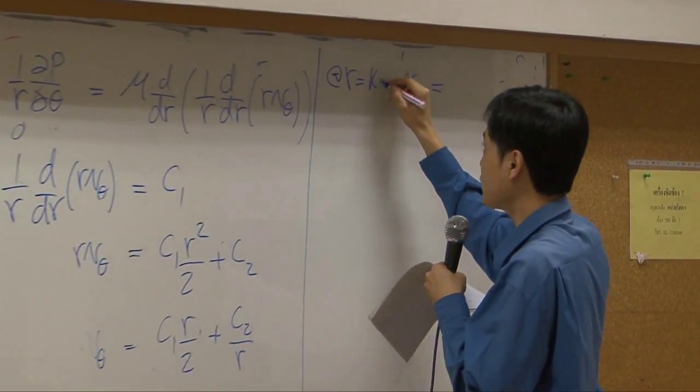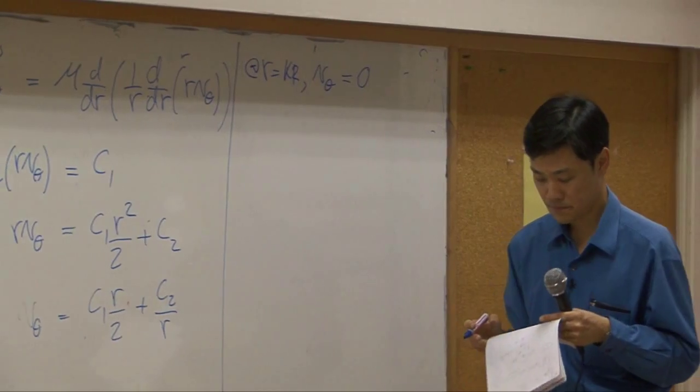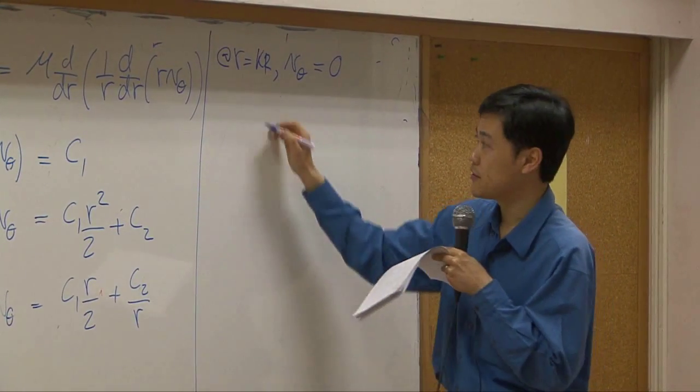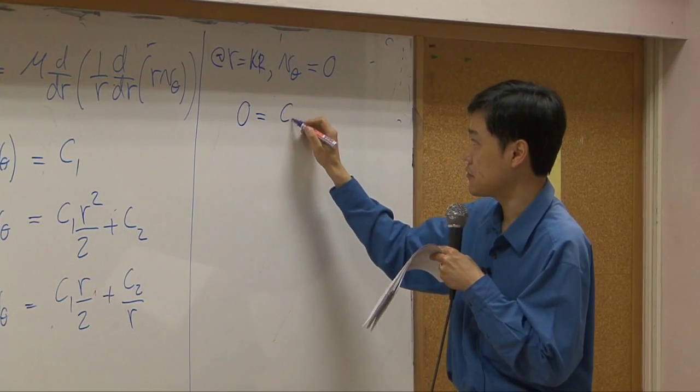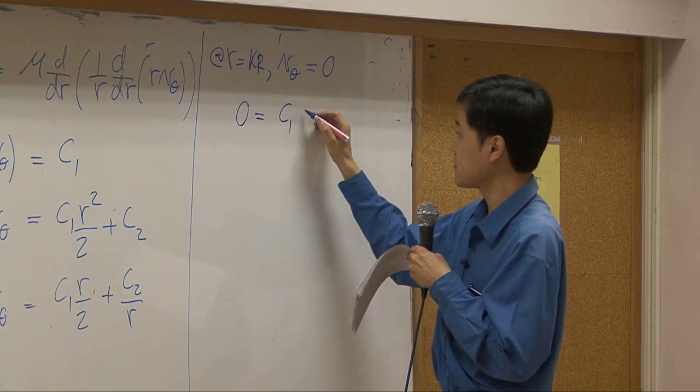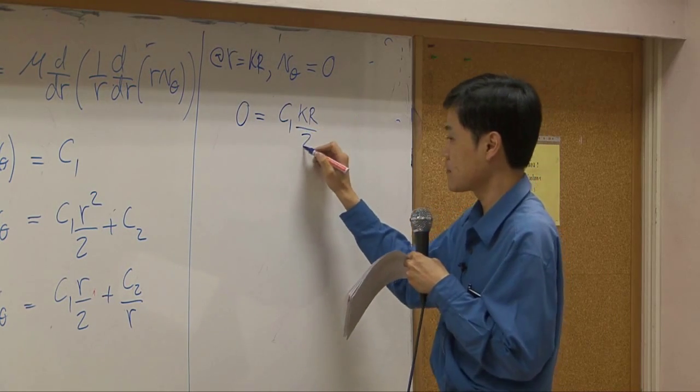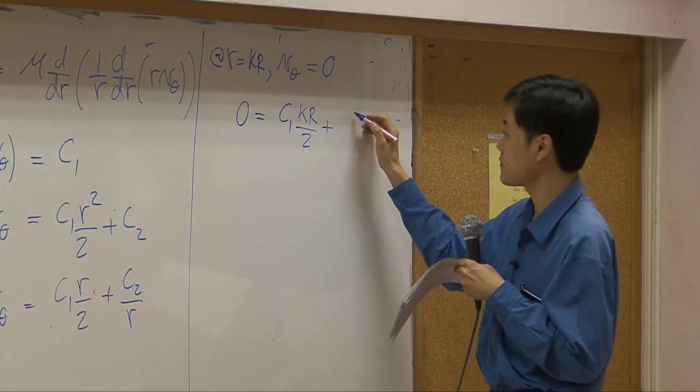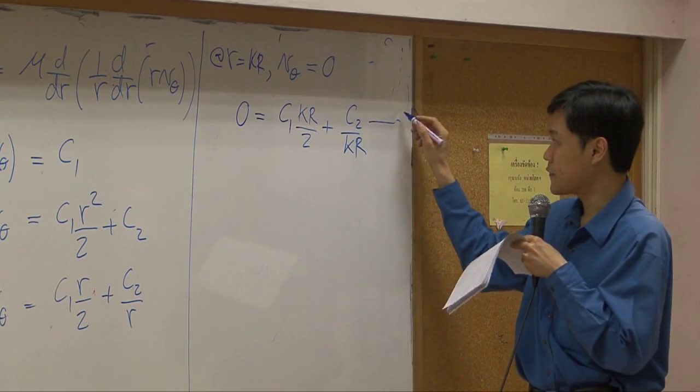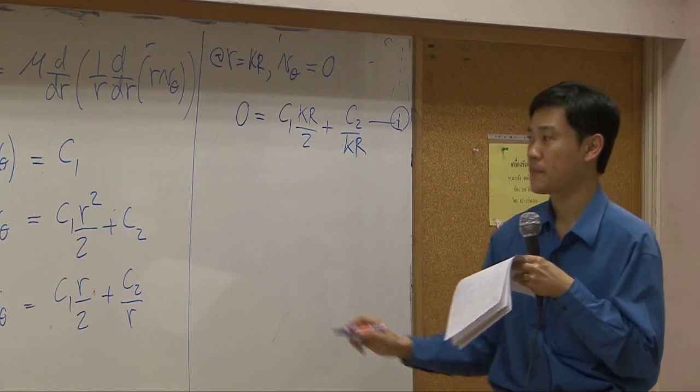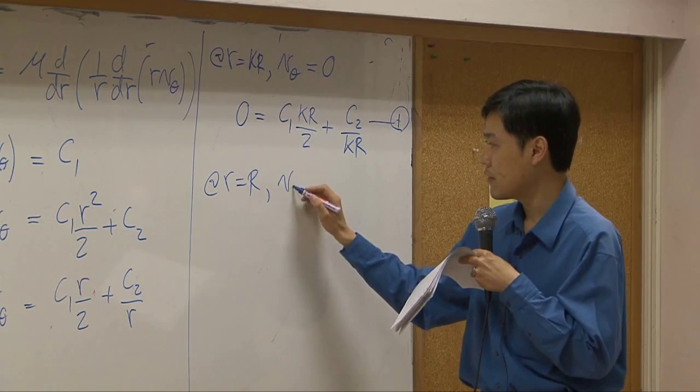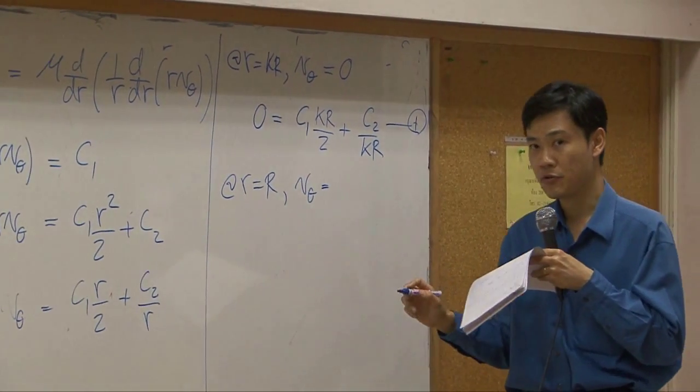At r equal to kr, velocity is zero. Replacing the boundary condition in there, you have zero. That's the first equation. And then another boundary condition: at r equal to capital R, v theta is equal to what?